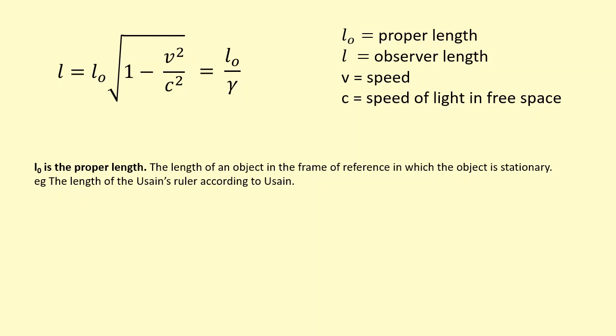For example, the length of Usain Bolt's ruler according to Usain Bolt who's running with the ruler, so to Usain Bolt the ruler is stationary. Or the length of the track according to the lineman, because the lineman is standing still on the track. Or the length of a spaceship according to someone who's riding on the spaceship.